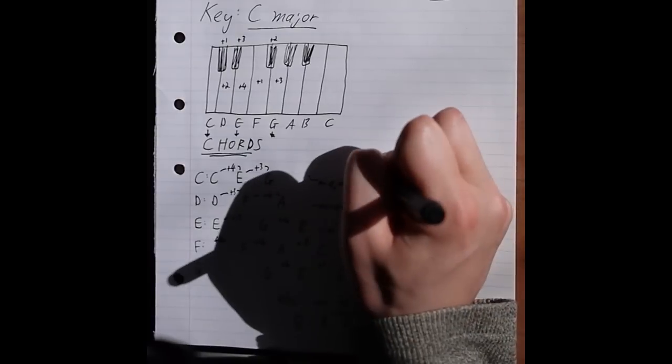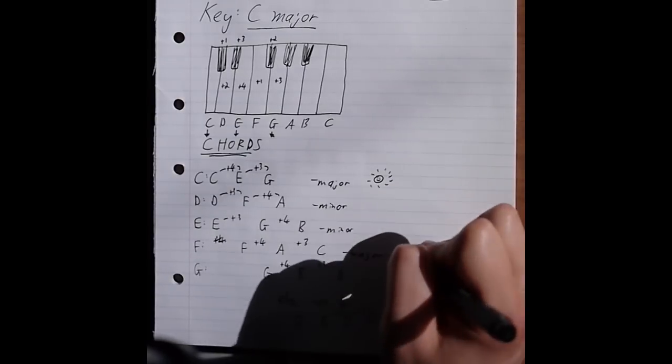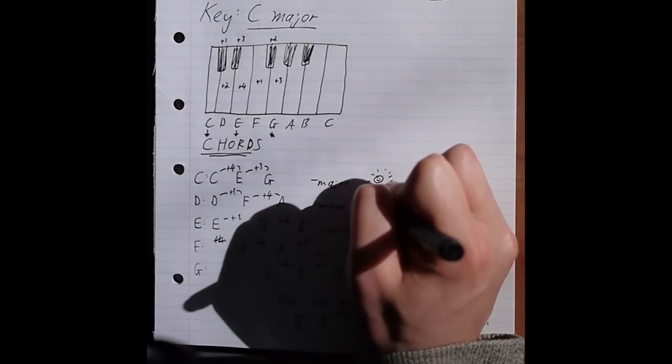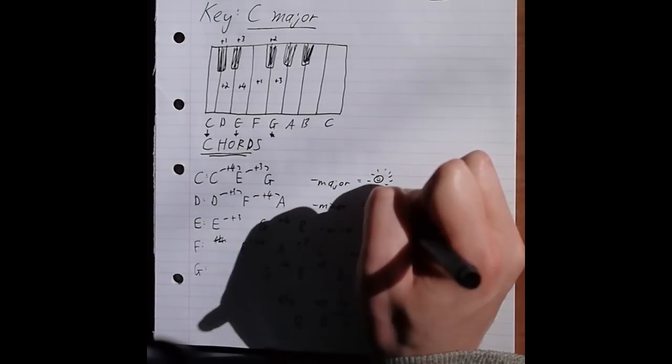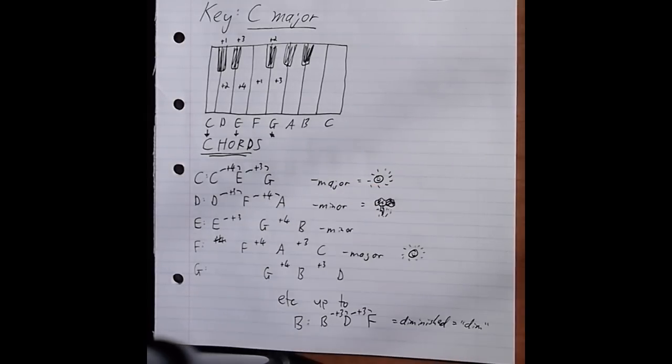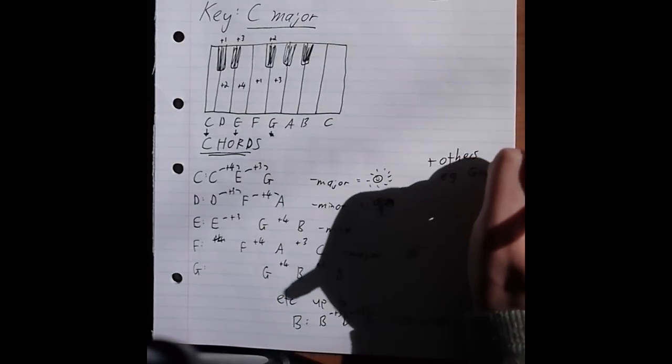So major chords are kind of happy sounding, they sound like this. Minor chords are less happy, they sound like this. And diminished chords are sort of the arrival of the villain or something, and they sound like this.